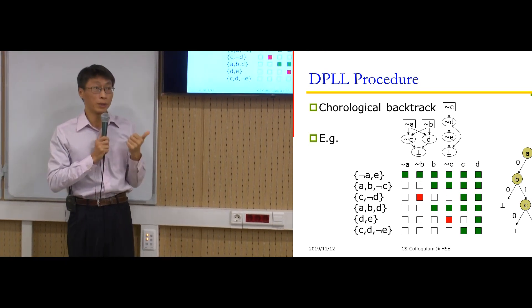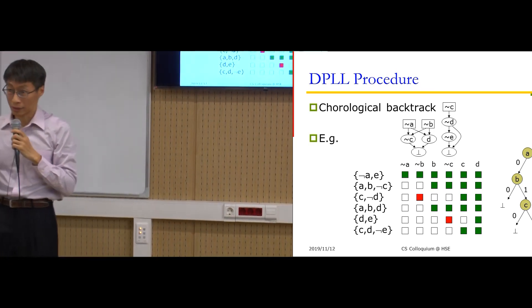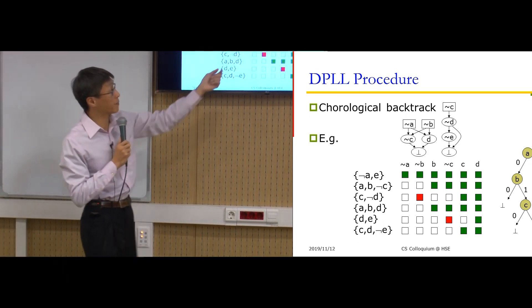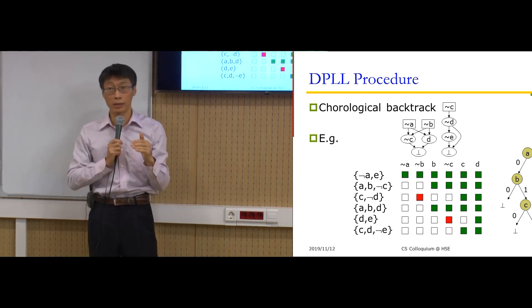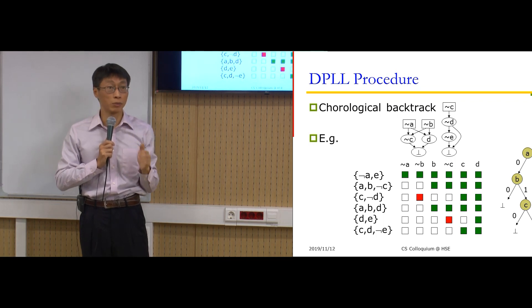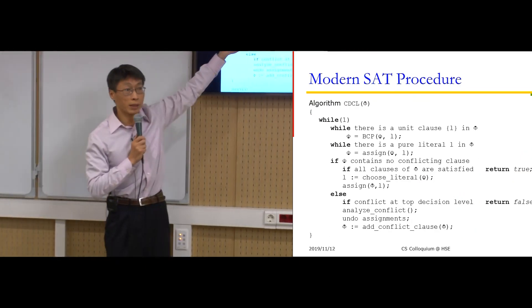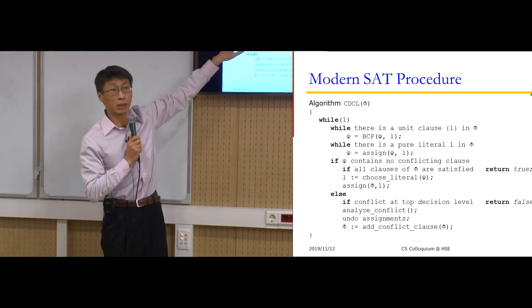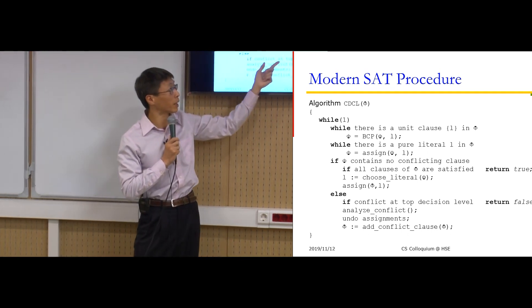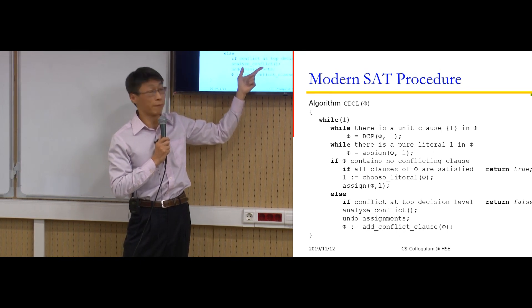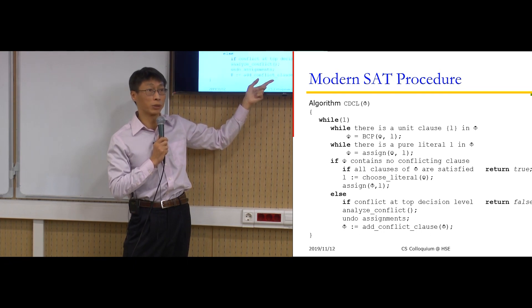We notice that these implications are very useful. Conflict-driven clause learning (CDCL) derives useful information from the implication graph to prevent similar mistakes in future variable assignments.